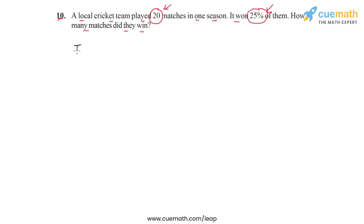The total number of matches played is 20. The percentage of matches won is 25%. Now we have to find the number of matches won. We're given the percentage and need to find the absolute number of matches won.